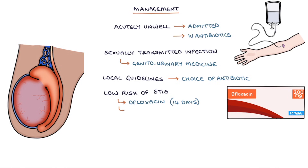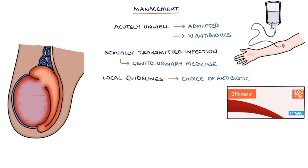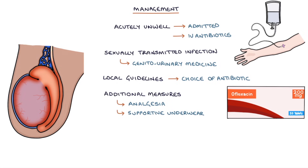Alternatives to ofloxacin are levofloxacin or ciprofloxacin, doxycycline, or co-amoxiclav. Additional measures to help with symptoms and aid recovery are analgesia such as paracetamol, supportive underwear to support the testicle and relieve symptoms, a reduction in physical activity, and abstaining from sexual intercourse.